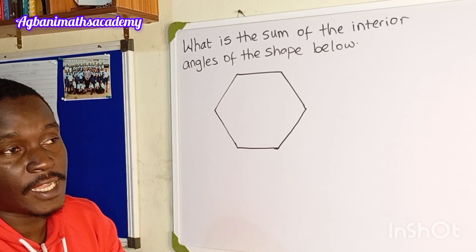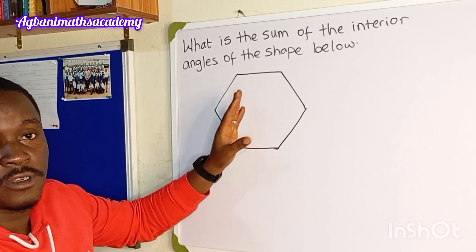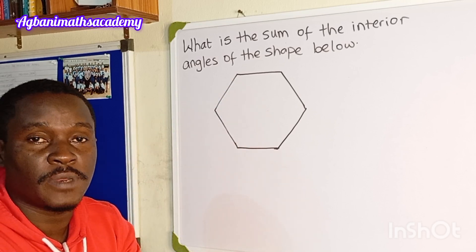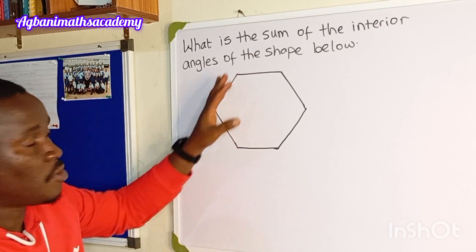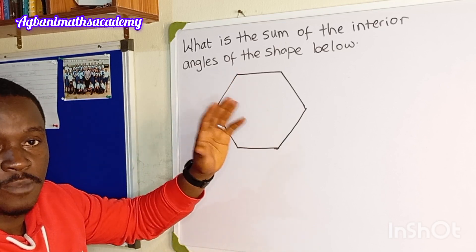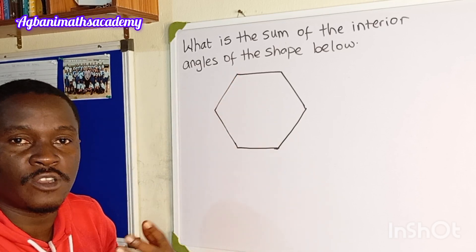The first thing we know is that this shape is a polygon. A polygon is a plane shape that has at least three sides. So this is more than three sides, so we are sure that it is a polygon. But what type of polygon is this?